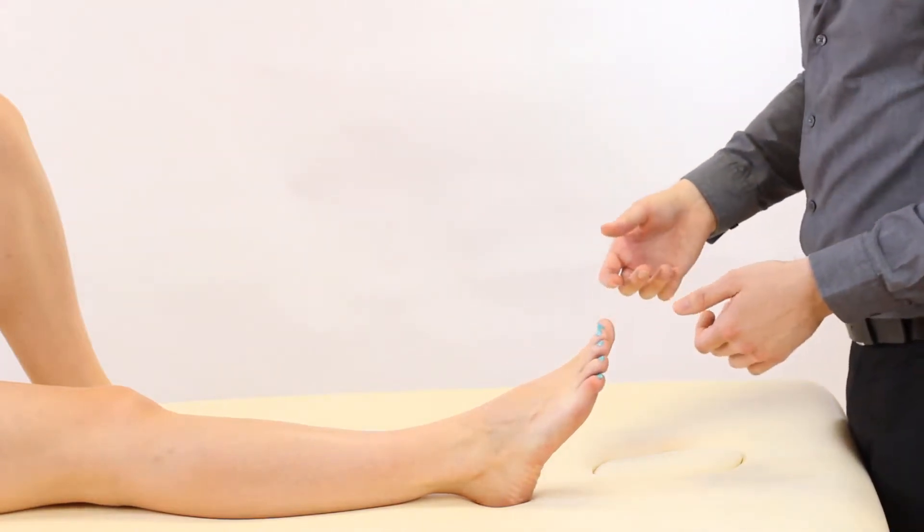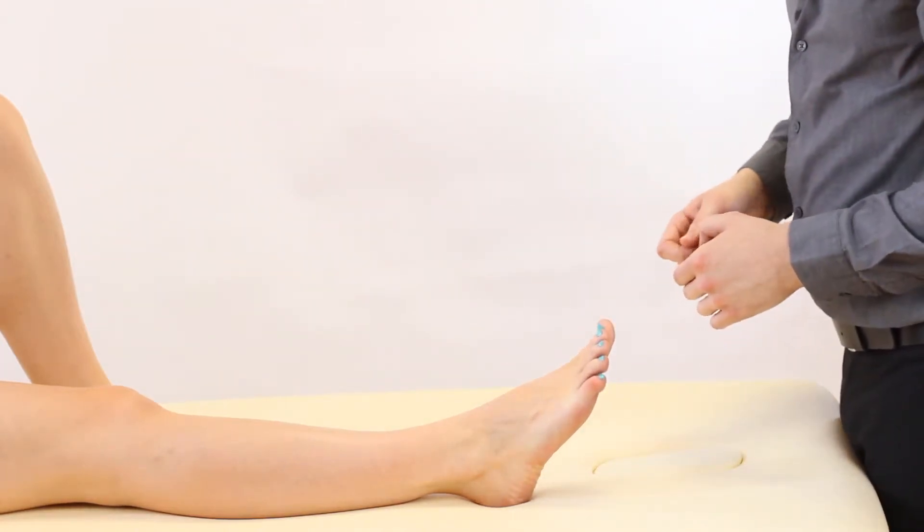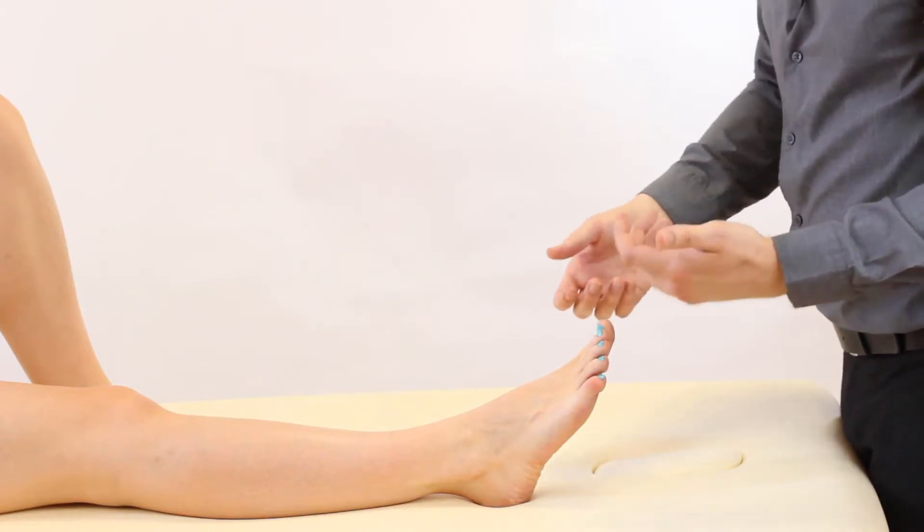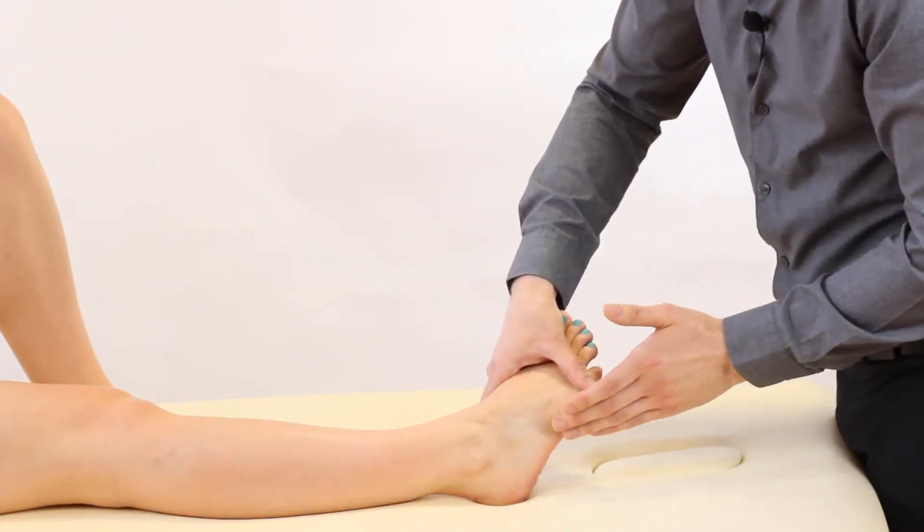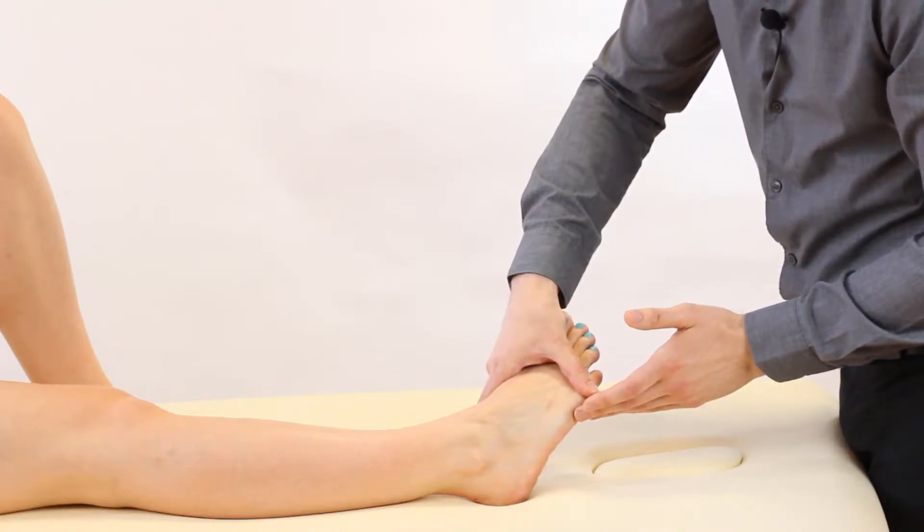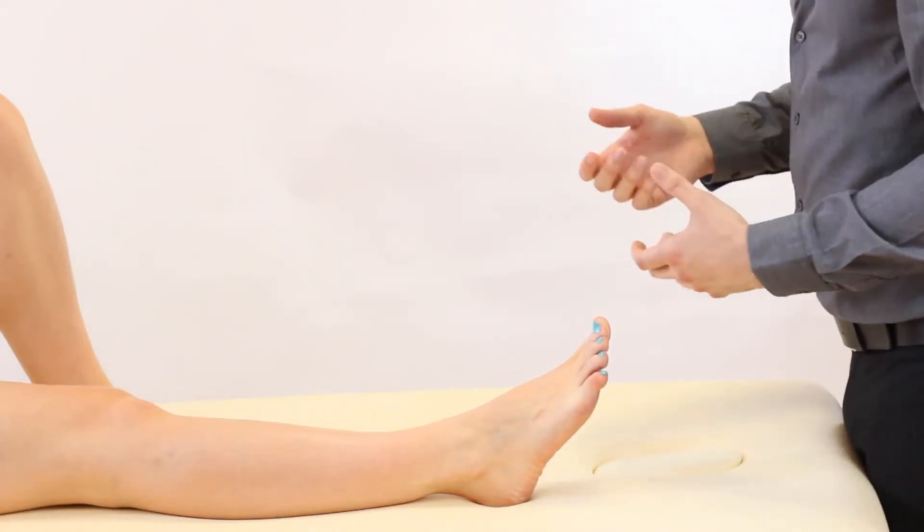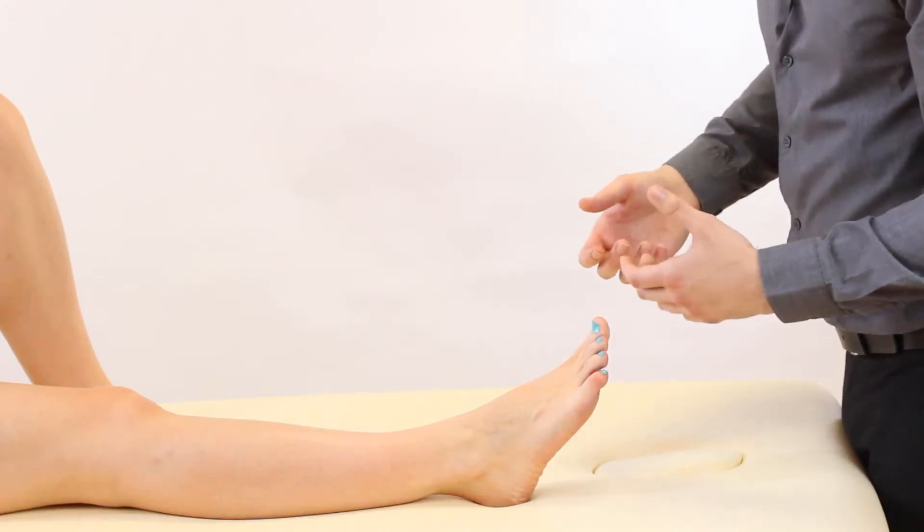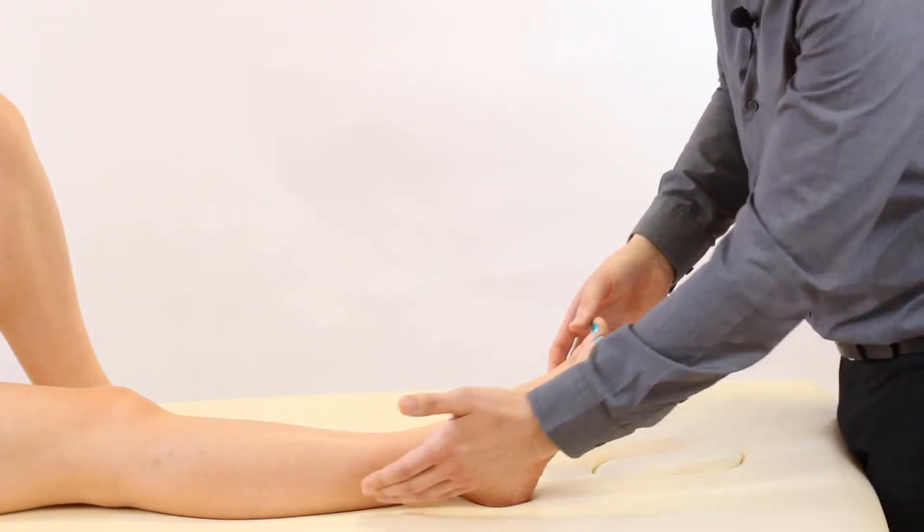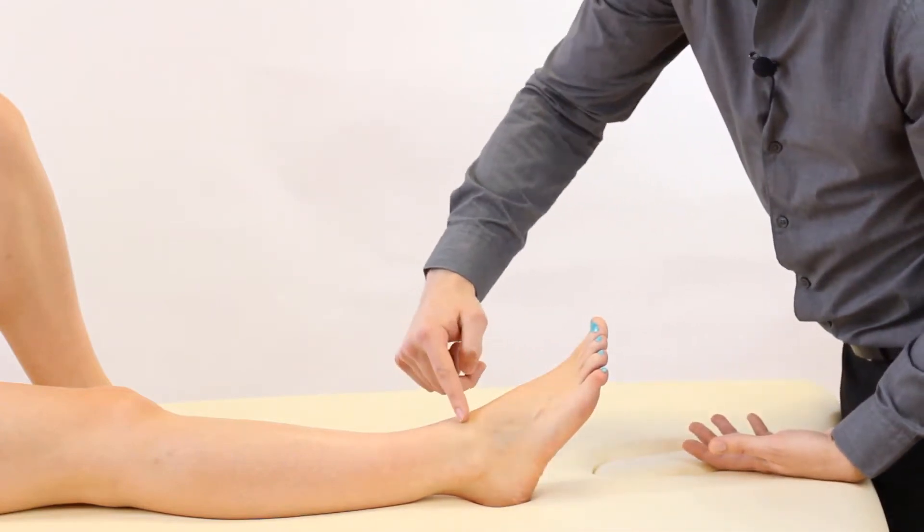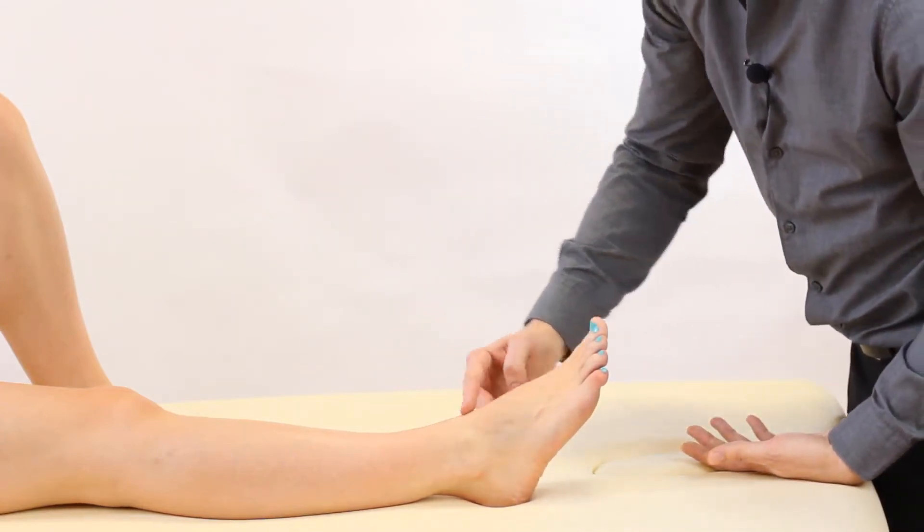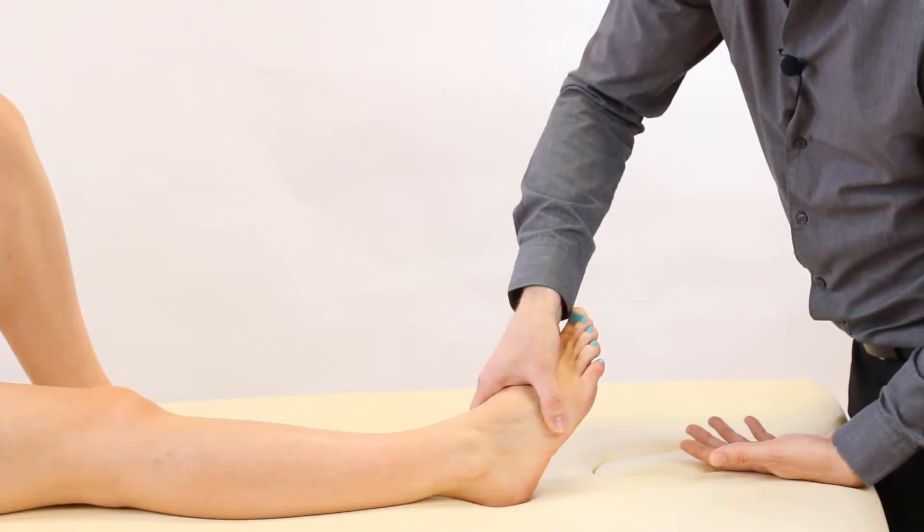The normal range of motion is 40 degrees and the expected end feel is elastic as we get to the end range. It's these soft tissue structures that remain on stretch at the end. If it does feel like a more abnormal hard end feel this could be due to chronically tight tissue or because of osteoarthritis that has occurred in and around the joint margin which is preventing this inward movement.